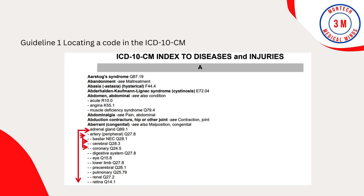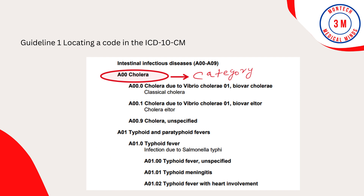See the image as an example of the alphabetic index of main terms and subterms. It is essential to use both the alphabetic index and tabular list when locating and assigning a code. The alphabetic index does not always provide the full code. Selection of the full code, including laterality and any applicable seventh character, can only be done in the tabular list.